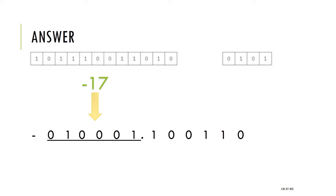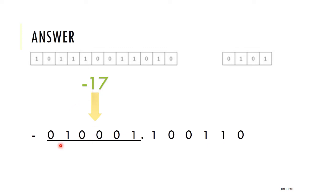Now I have the front part — the digits before the decimal point. I evaluate that portion: 1, 2, 4, 8, 16, 16, and 1 is 17. But I must remember this is a negative number, so the integer part is negative seventeen.